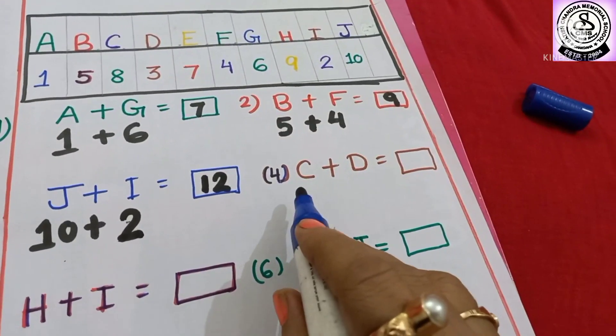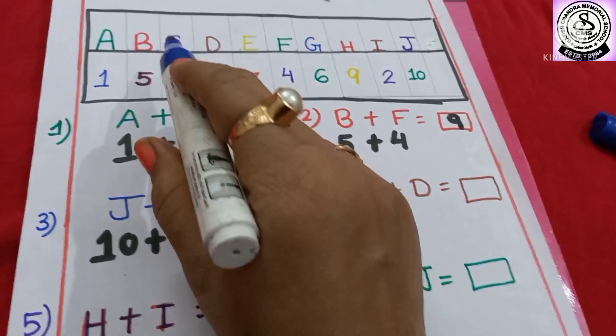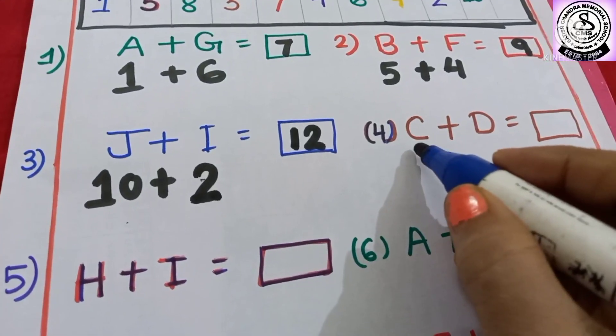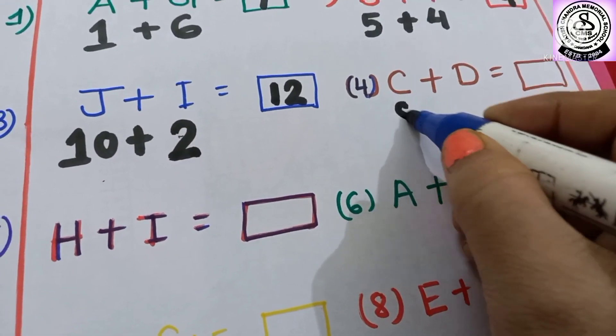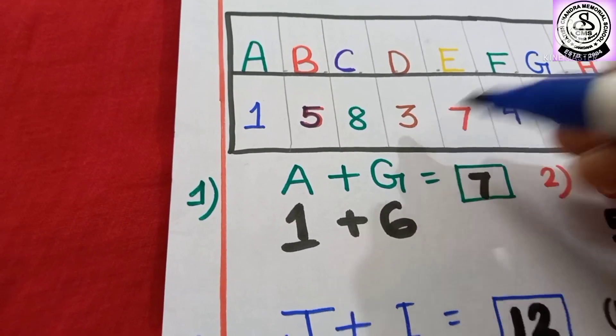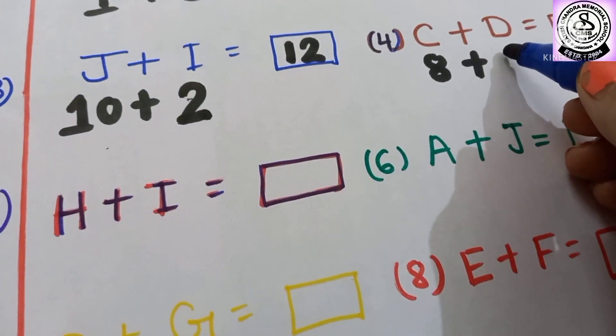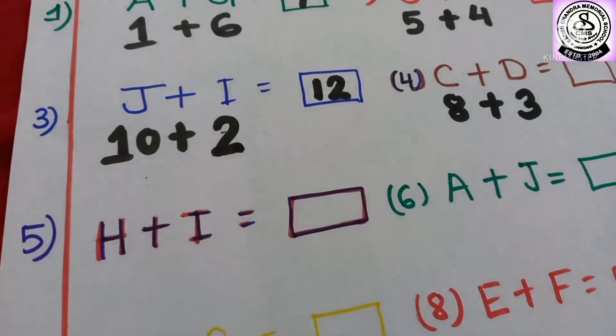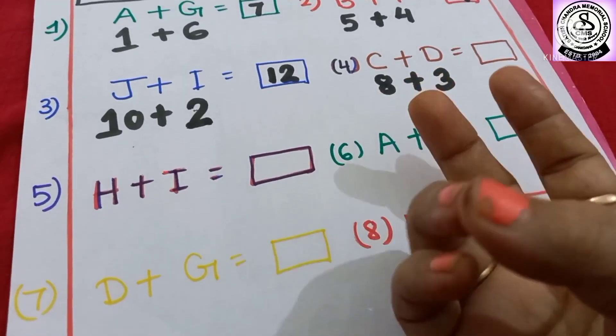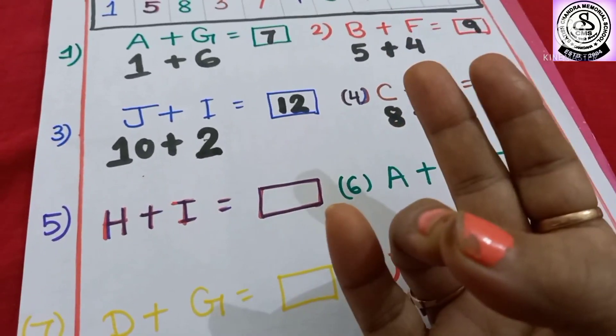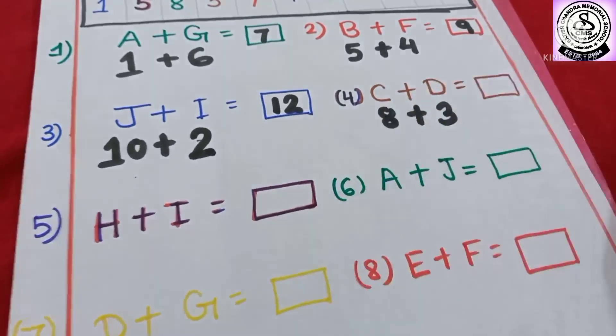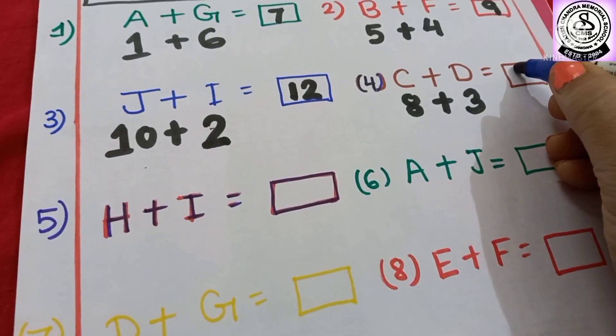Then number 4. C plus D. C means 8, and D means 3. So, 8 plus 3. After 8 you have to count more 3 finger marks: 9, 10, 11. So here you have to write 11.